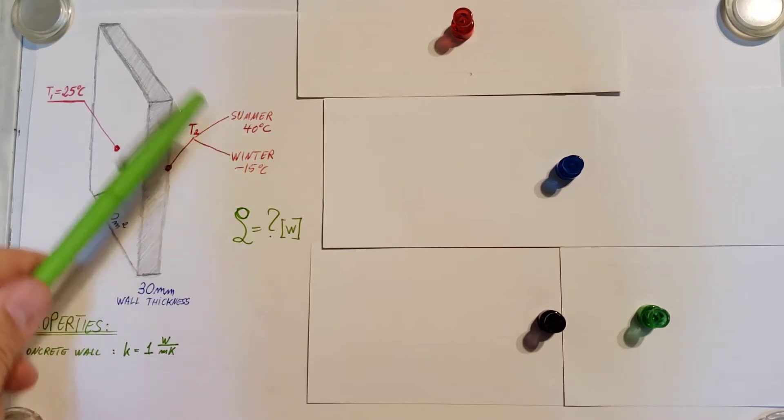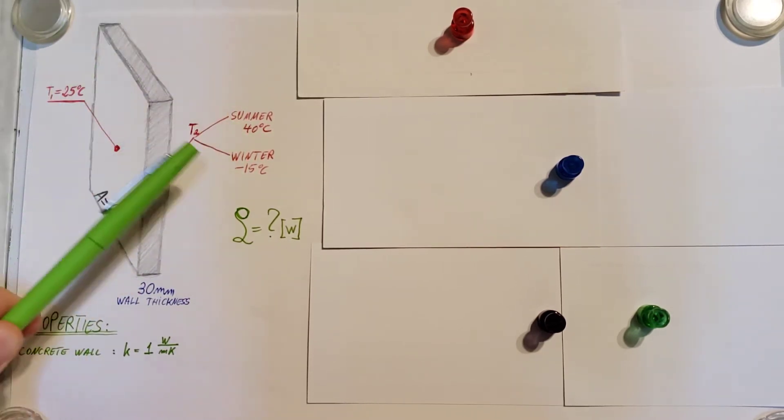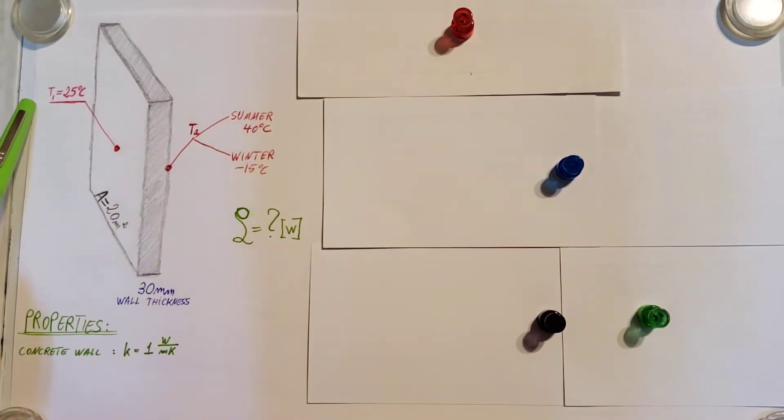We're going to pick two temperatures that are fairly extreme. Let's say for the summer, 40 degrees Celsius and negative 15 degrees Celsius for the winter. And also we know that inside the wall, on the other side of the wall, we have a temperature that's constant at 25 degrees Celsius.